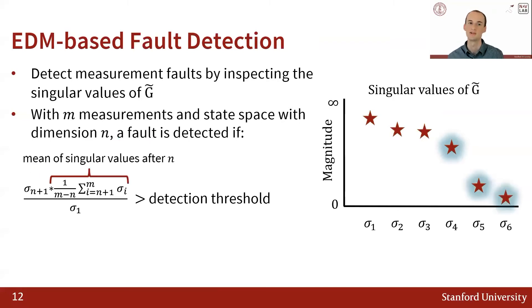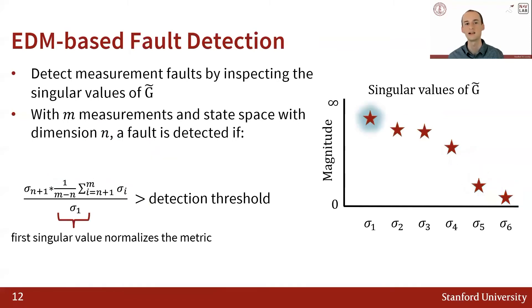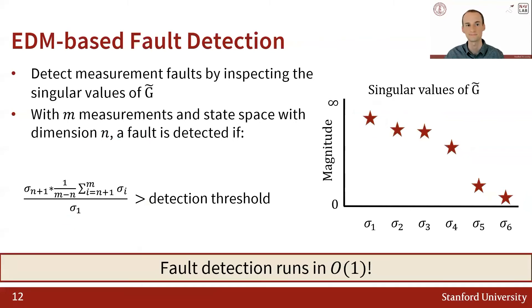The second element of our test statistic is the mean of all singular values that should be zero — in this case, the mean of the fourth and subsequent singular values. Finally, we use the first singular value to normalize the test statistic to close to 1. Normalizing the test statistic means that the EDM-based FDE is accurate across a large range of data noise levels.